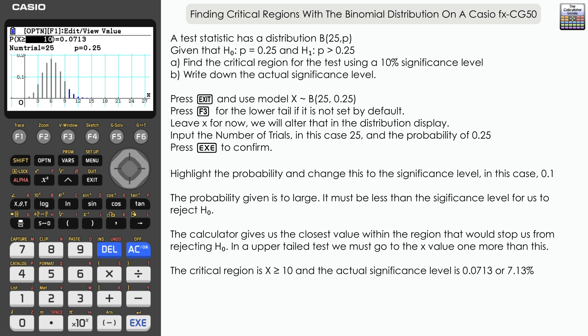There we go: how you can find the critical region using the distribution app for a binomial distribution on a Casio FX-CG50. Once again, we've only focused on one-tail tests in this video. There'll be a subsequent video which will look at a two-tail test and how that needs to be conducted slightly differently.